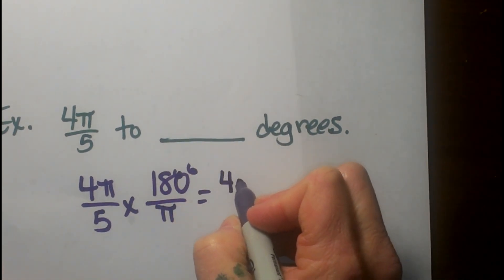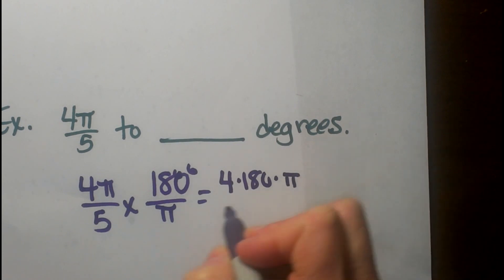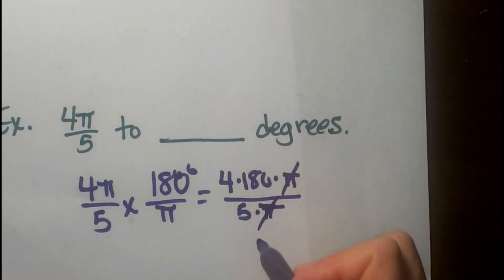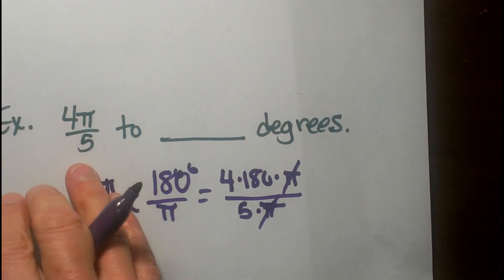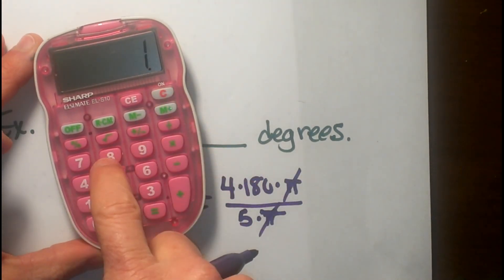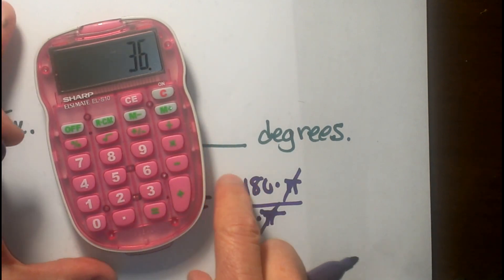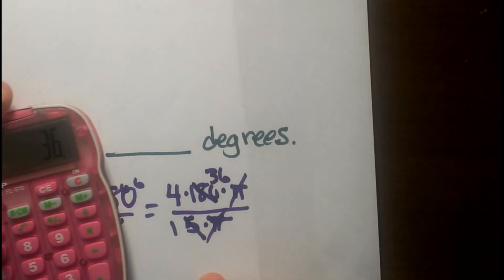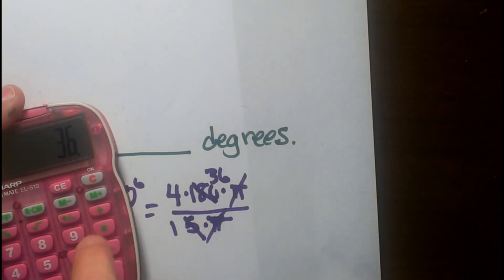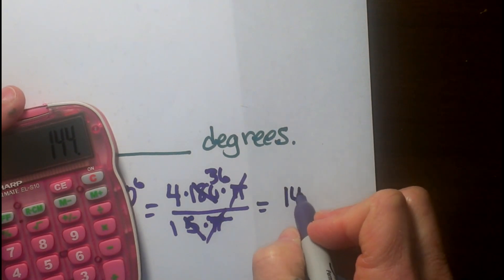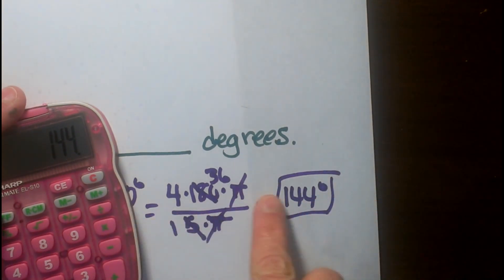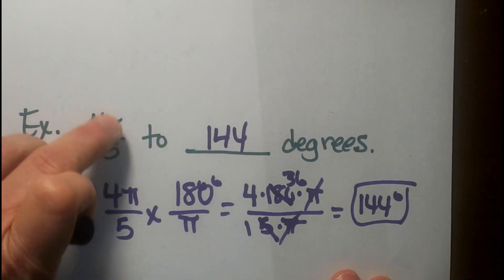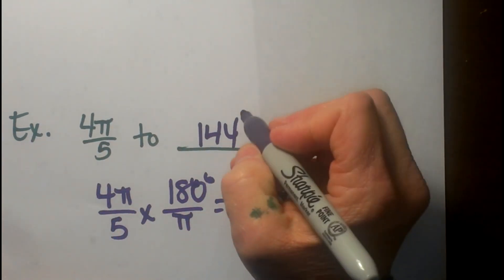Now I am just going to do 4 times 180 times pi on top, over 5 times pi. What do you notice cancels? Well the pi's cancel out, and I also can take 180 and divide it by 5 because that is a nice clean division. 180 divided by 5 is 36. So I can cancel this out and make that 1, cancel that out and make that 36. So I have 4 times 36 and that gives me 144. So that is the degree measure: 4 pi fifths is equal to 144 degrees.